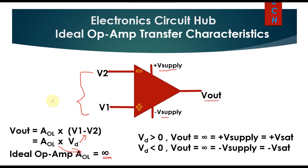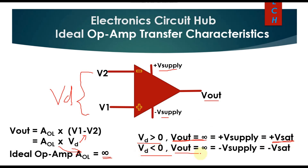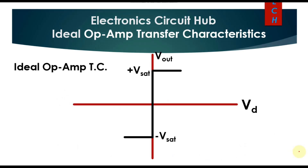If Vd is greater than zero, your Vout equals infinite — if you multiply something by infinite you will get an infinite value — so your output will go towards positive saturation and Vout equals +Vsat. If your Vd is less than zero, your output equals infinite in magnitude, your op-amp will go towards negative saturation, and you will have an output of -Vsat.